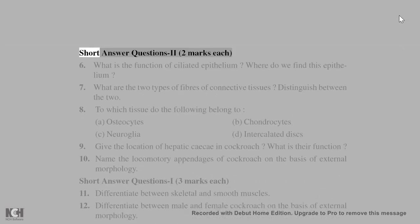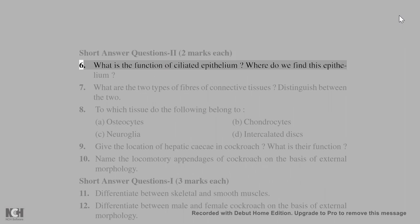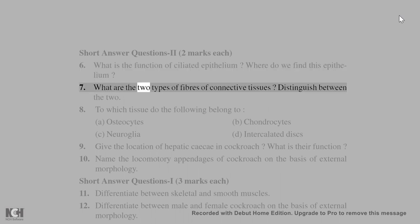Short answer questions 2, 2 marks each: 6. What is the function of ciliated epithelium? Where do we find this epithelium? 7. What are the two types of fibers of connective tissue? Distinguish between the two.